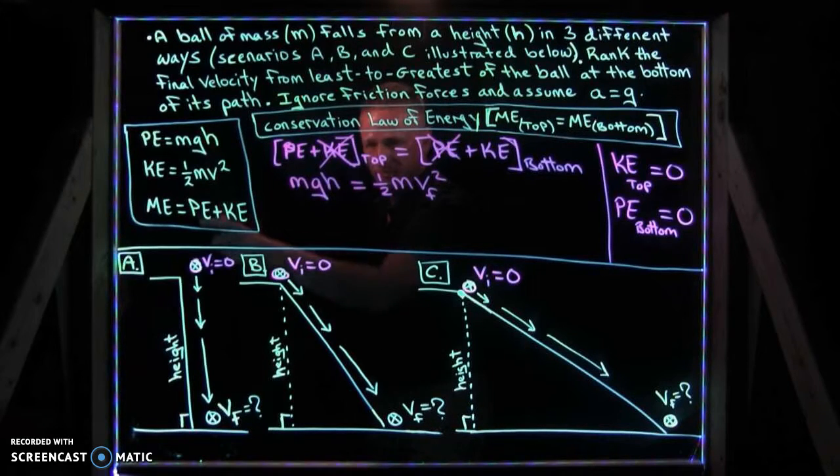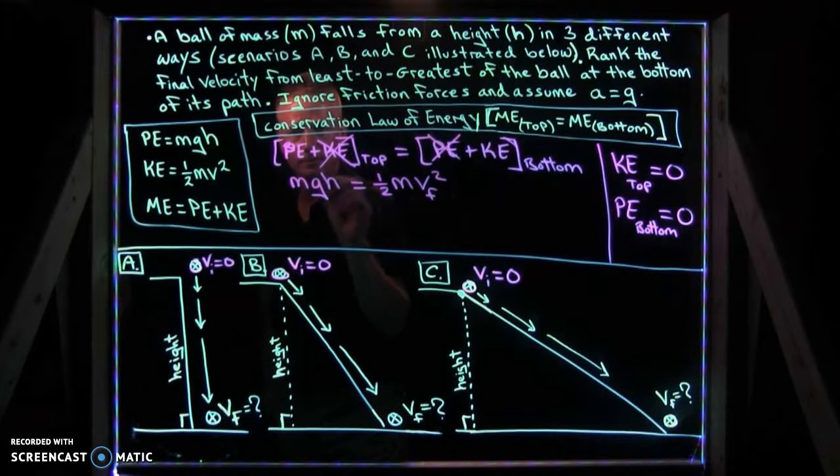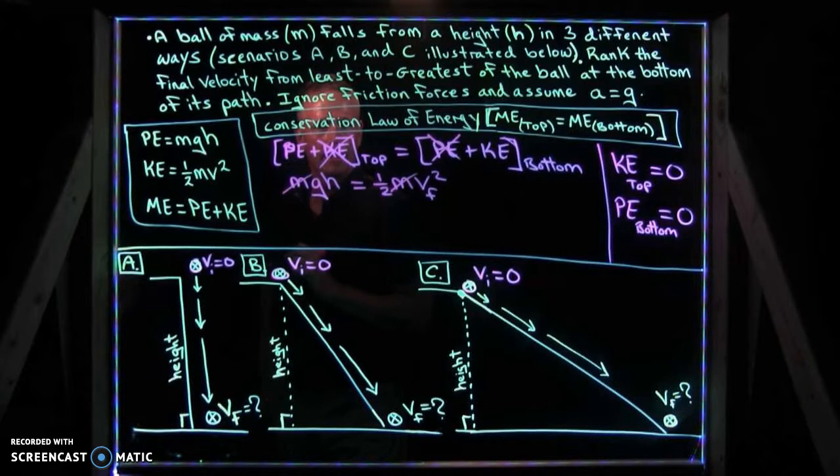Now, if you solve this equation, something interesting happens. You quickly realize you have an m on each side of the equation. If you divide by mass, mass cancels out.